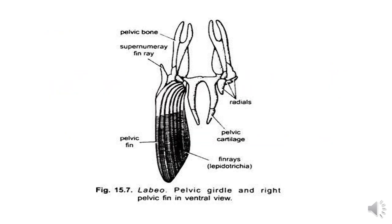This is the diagram of the pelvic girdle, which includes the pelvic bone, pelvic cartilage, radials, and on the right side, the pelvic fin. This is all about today's lecture. Thank you.